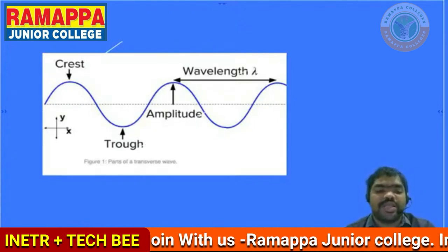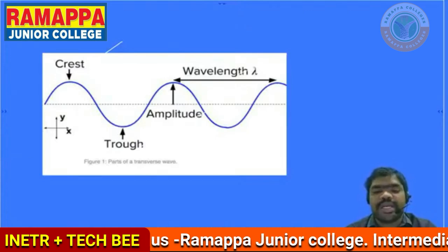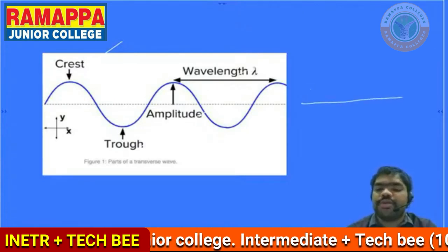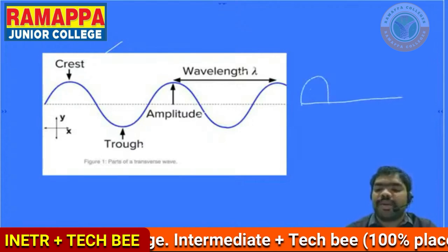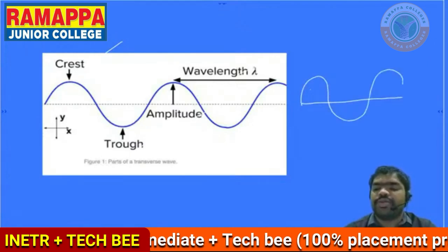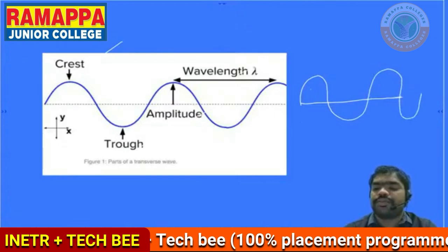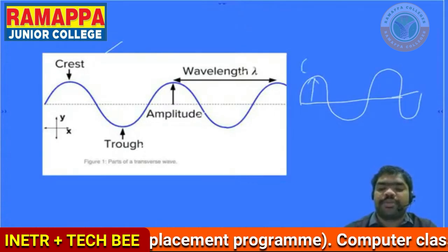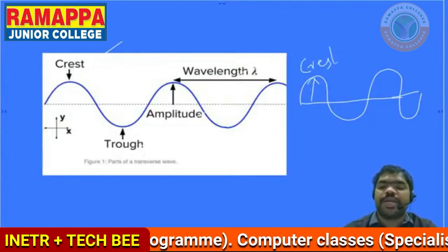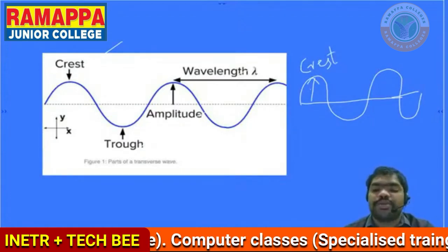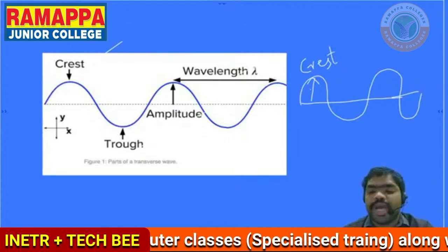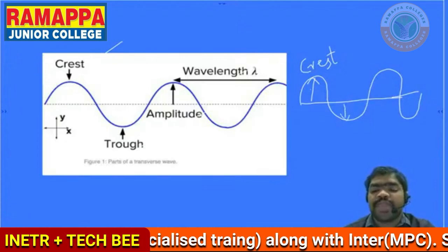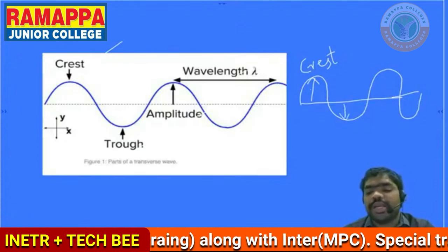These are the four important concepts existed. If we have the crest, we have the mean position. The mean position is the object, the distance traveled. That is the positive direction and the negative direction. The crest is nothing but the maximum displacement from the mean position in the positive direction. In the same way, the trough is in the negative direction.